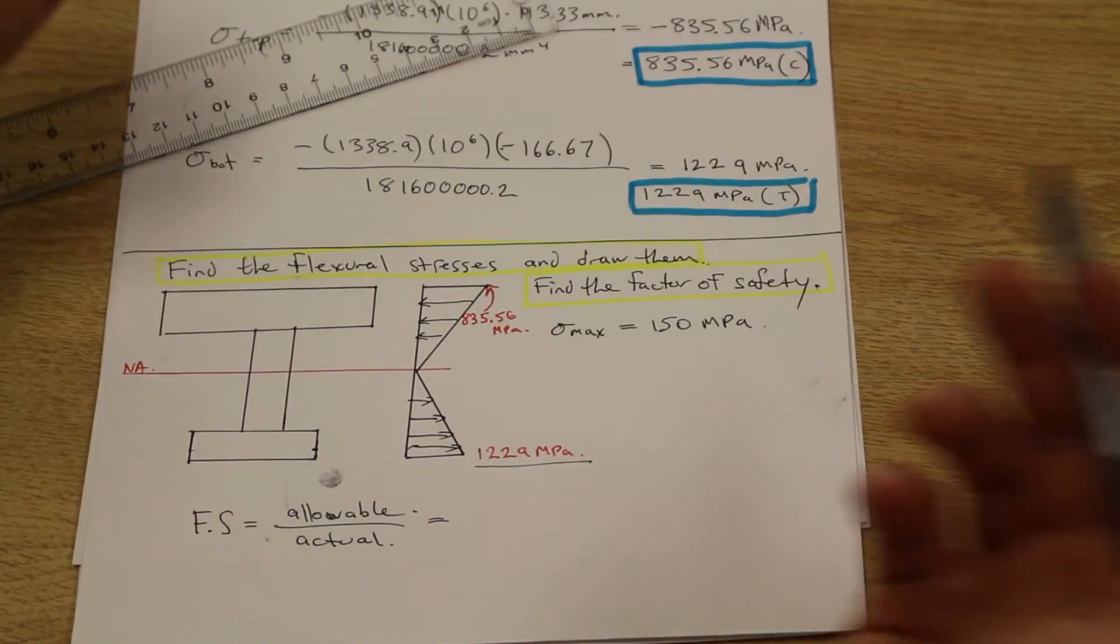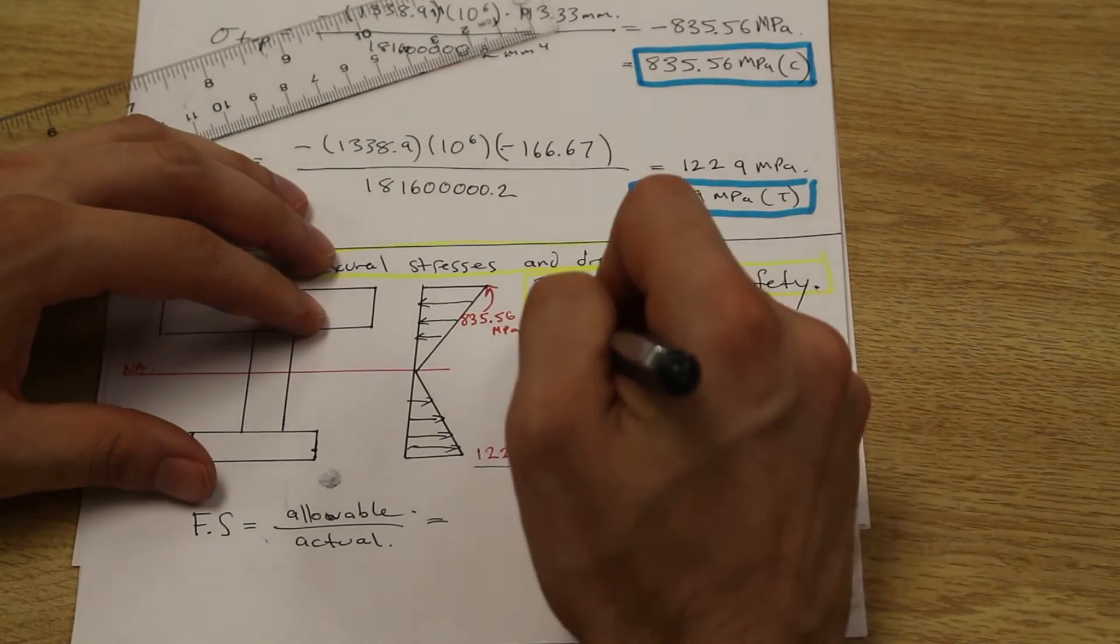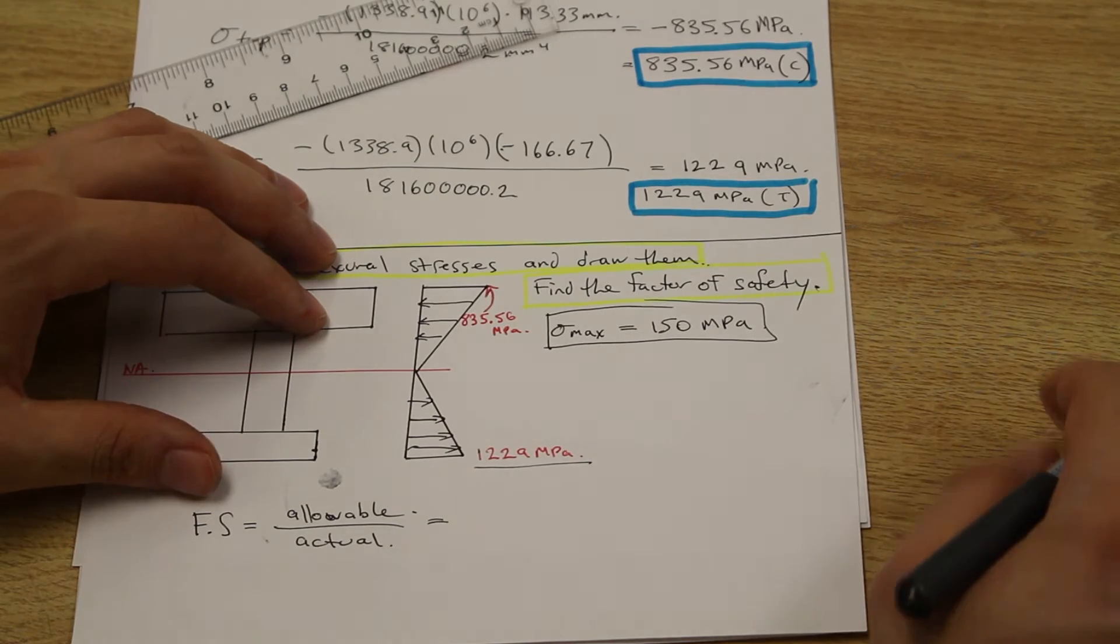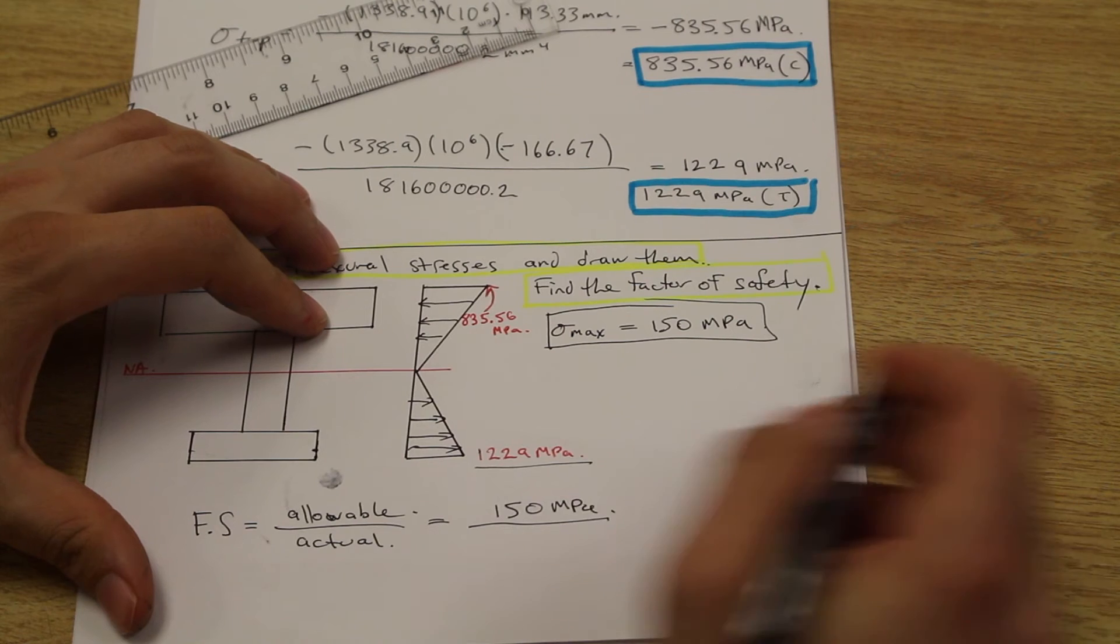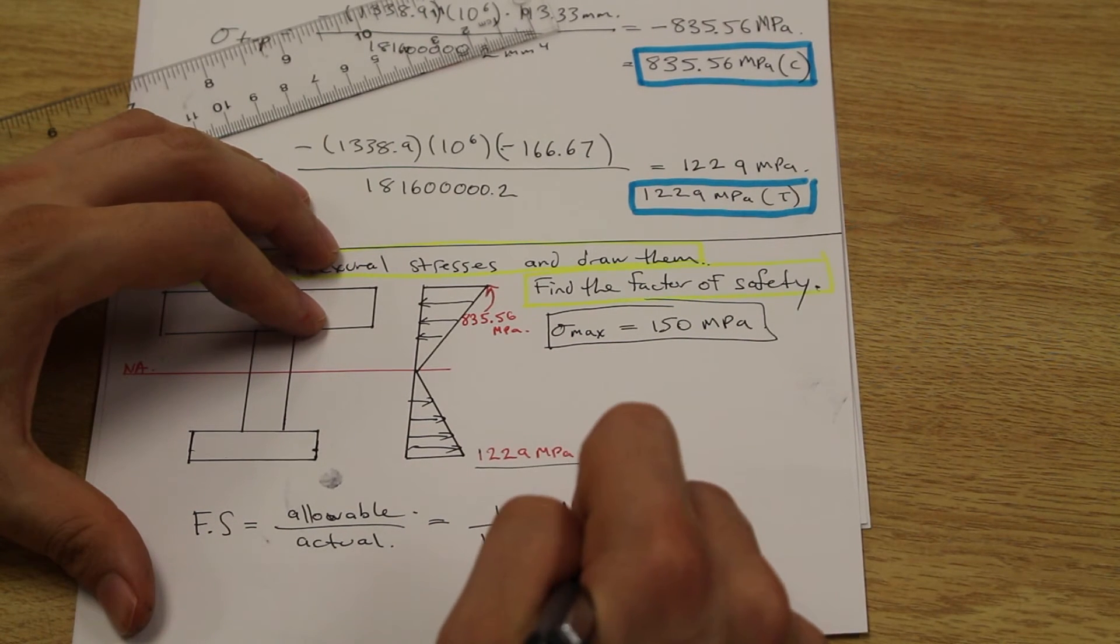Now, in the question, it always has to be given, if they want you to find the factor of safety, they've got to give you the allowable, right? We discussed that before. And the allowable is given as 150 MPa. Just looking at this right now, I think we can all see that this is not going to be safe, but let's just do it anyway because the question asks us to.